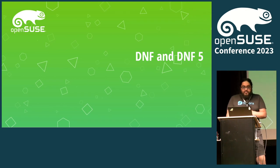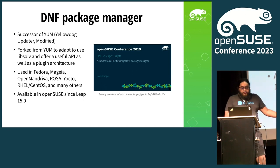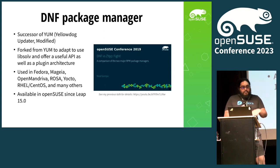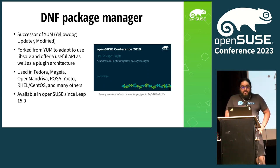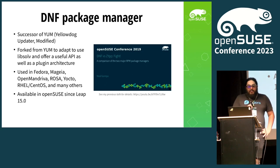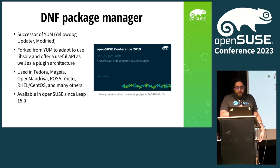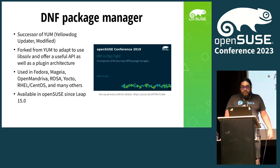We're going to start with talking about DNF and DNF5. First, a little review: DNF package manager is a successor to the Yellow Dog Updater, which was released eons ago and doesn't exist anymore. It was forked from Yum so that we could use LibSolve, which YAL and OpenSUSE created, and also to offer a useful API and a plugin architecture. It's used in Fedora, Mageia, RHEL, CentOS, and it's been available in OpenSUSE since Leap 15.0, courtesy of yours truly.